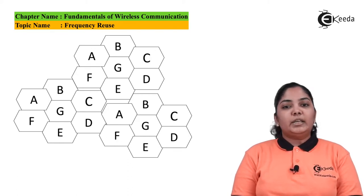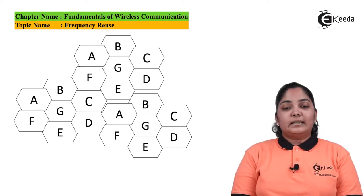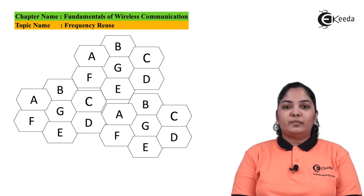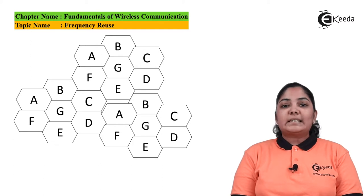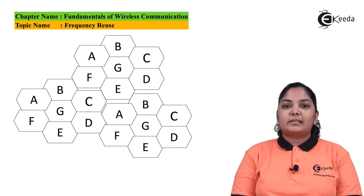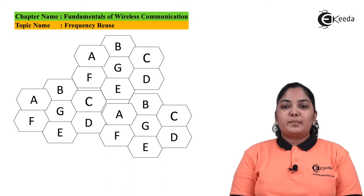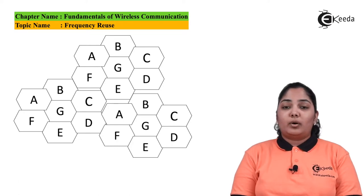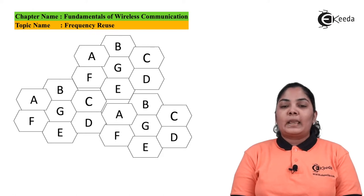Hexagon also represents the circular radiation pattern of an omnidirectional antenna — an antenna that radiates equally in all directions in a circular fashion. In this diagram we can see hexagon structures placed in a honeycomb fashion. We have multiple cells named A, B, C, D, E, F, and G. These seven cells form a cluster — the flower-like structure — and these clusters are repeated multiple times.